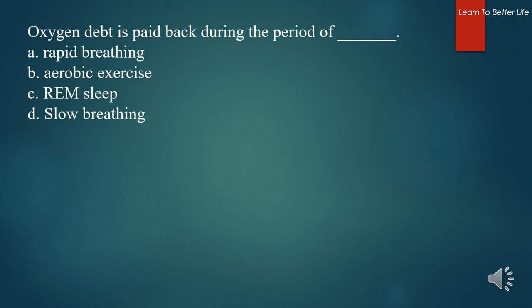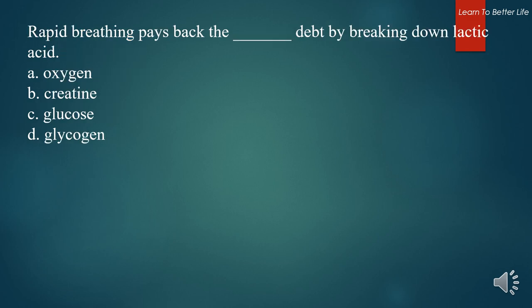Oxygen debt is paid back during the period of what? A. Rapid breathing. B. Aerobic exercise. C. REM sleep. D. Slow breathing. The answer is A. Rapid breathing. Rapid breathing pays back the what, which is the debt, by breaking down lactic acid. A. Oxygen. B. Creatine. C. Glucose. D. Glycogen. The answer is A. Oxygen.